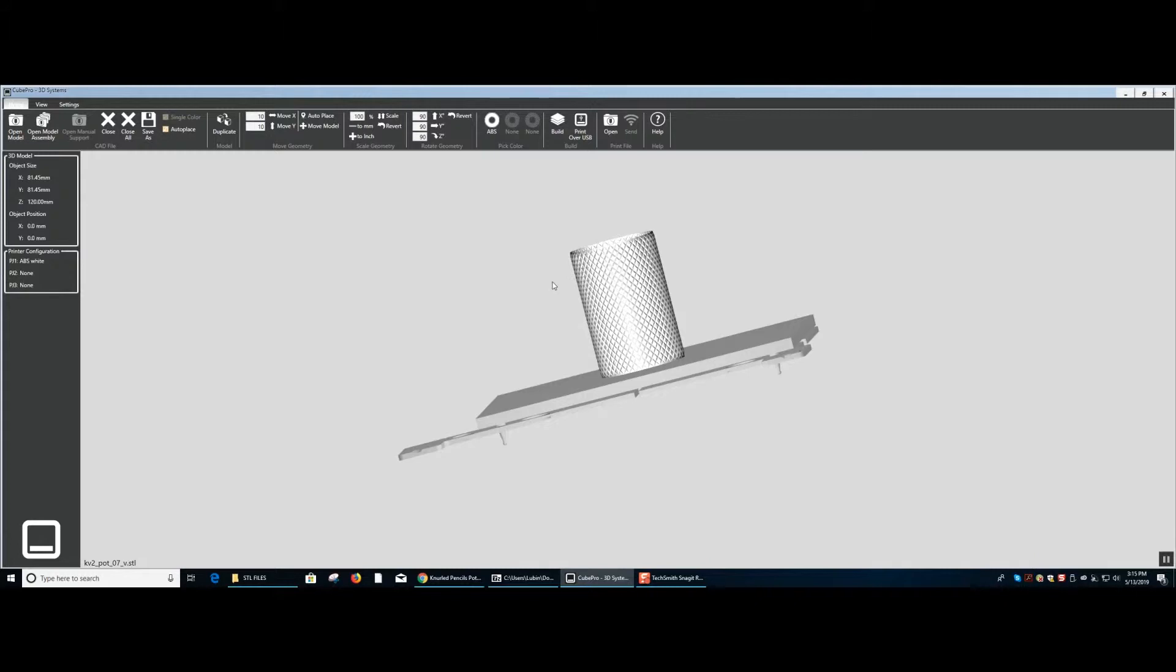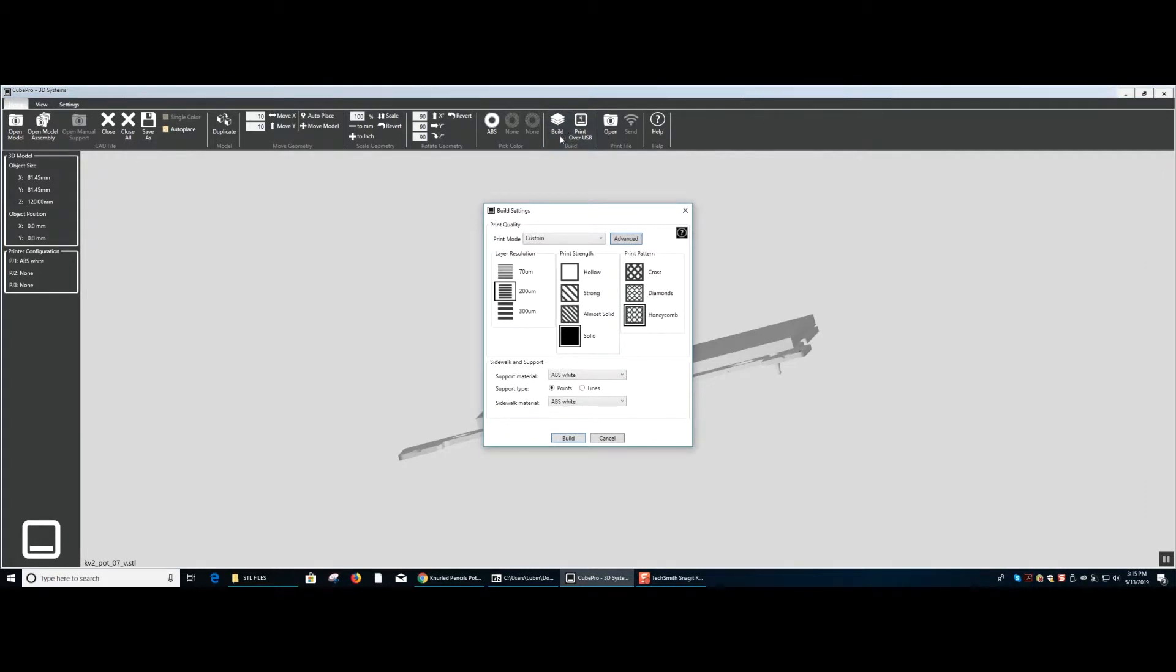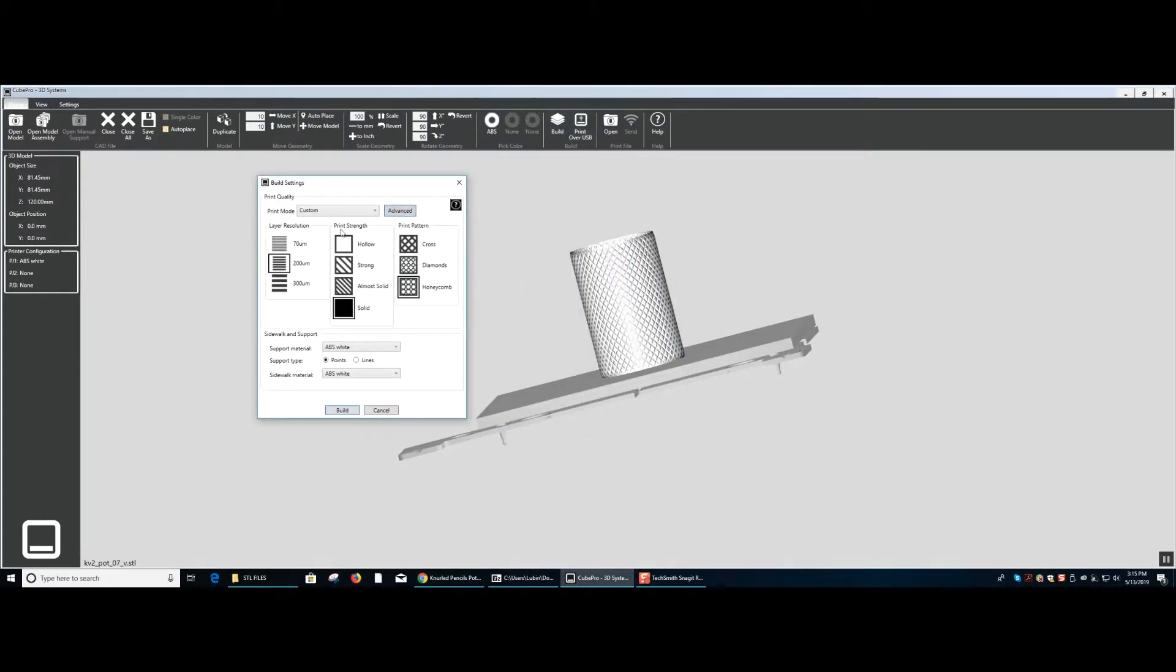The final step in this is going to the build icon in the top center of your computer screen and selecting it. It will bring you up this build settings tab. Now, regularly we want to use 200 layer resolution on a strong to almost solid layer strength and a print pattern of either cross or diamond pattern.